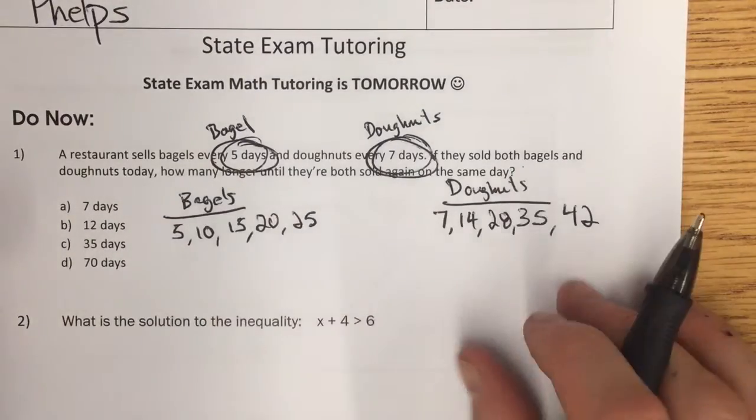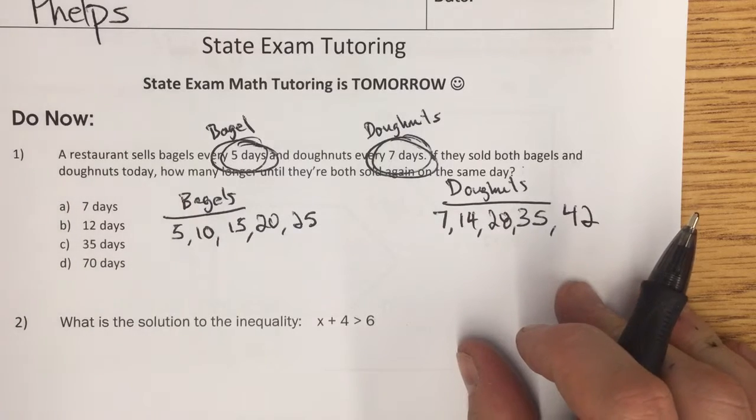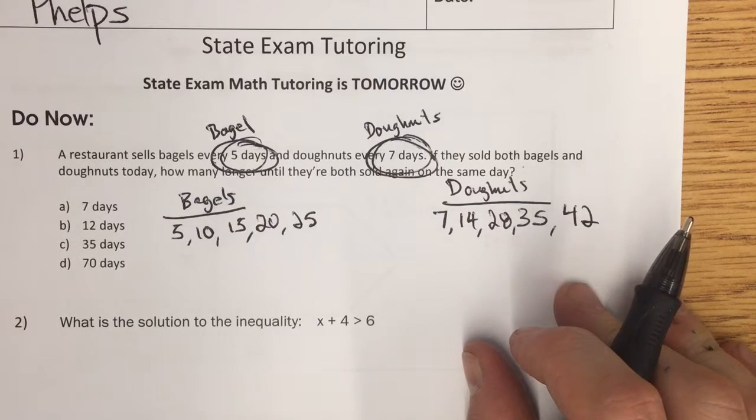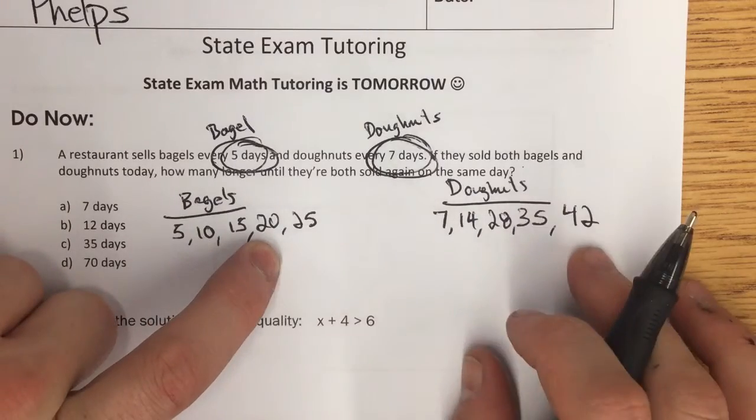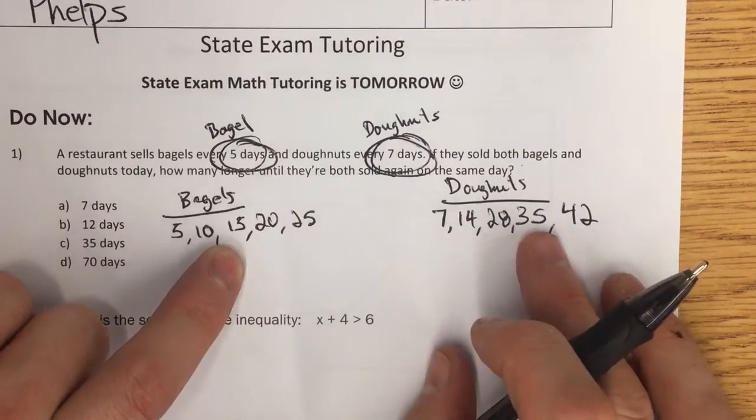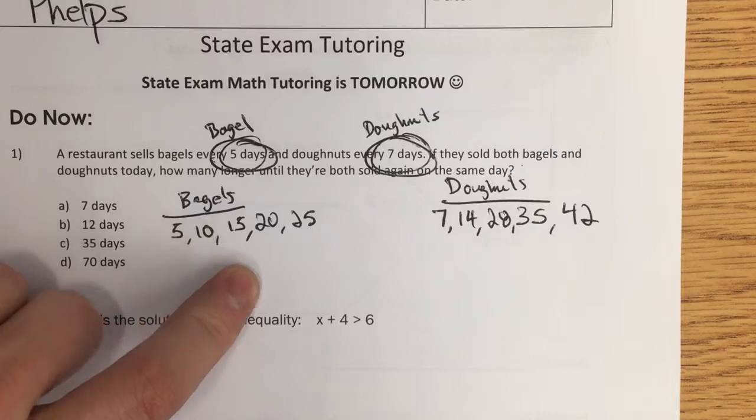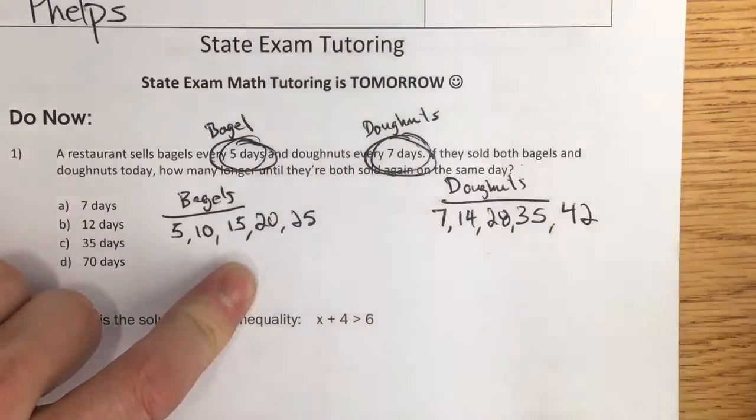And it's saying, what's the earliest they'll be sold again? Well, let's see. We're looking for a number they share, and these are multiples. So it's really asking for the least common multiple of both five and seven.